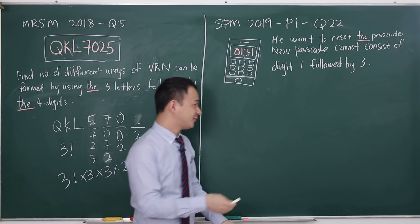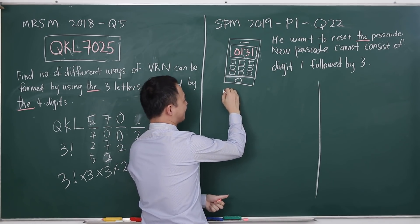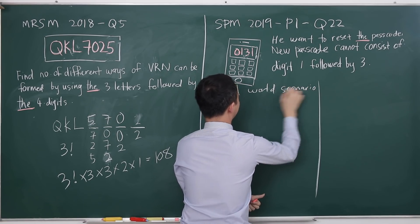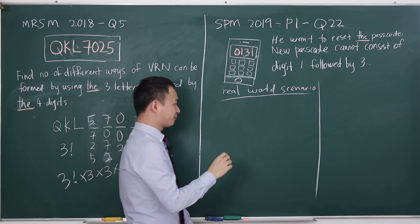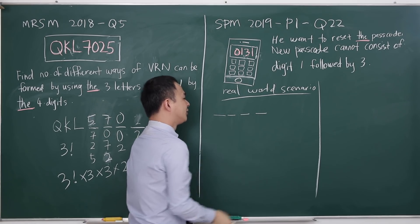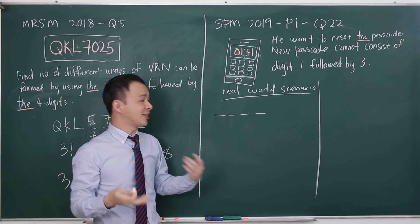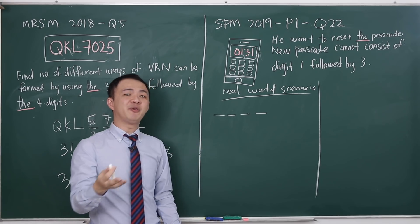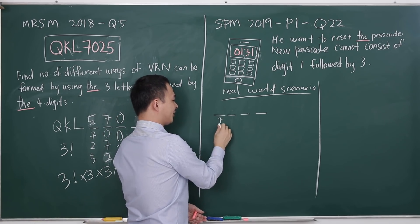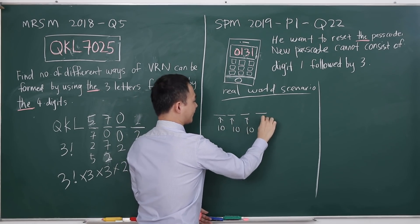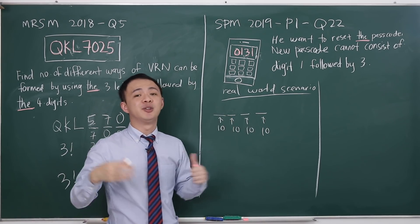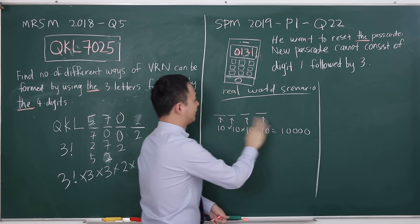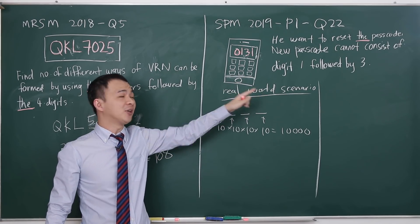The first case is the real-world scenario, where you can set any password you like. I have four digit positions, and since numbers can repeat, each position has 10 choices (0 to 9). So the total number of arrangements is 10 × 10 × 10 × 10 = 10,000 ways.